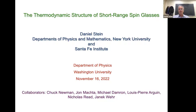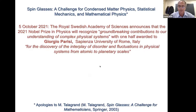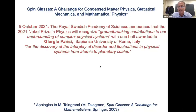As everybody knows, a year ago the Royal Swedish Academy awarded the Nobel Prize in Physics jointly to Suki Manabe and Klaus Hasselmann for their work on climate science, who shared half the prize. The other half went to Giorgio Parisi for solving what was at the time, in the early 80s, the notoriously difficult problem of disentangling the thermodynamic structure of mean field spin glasses, as well as its applications to problems in computer science and biology.